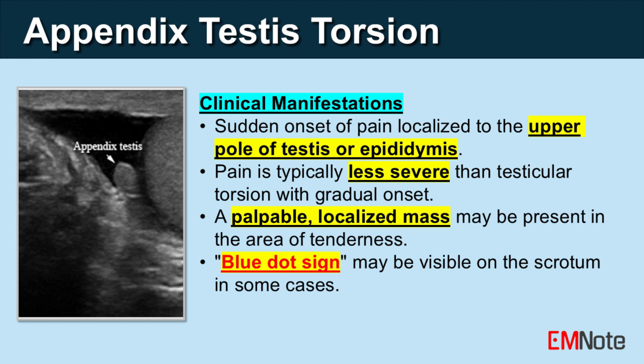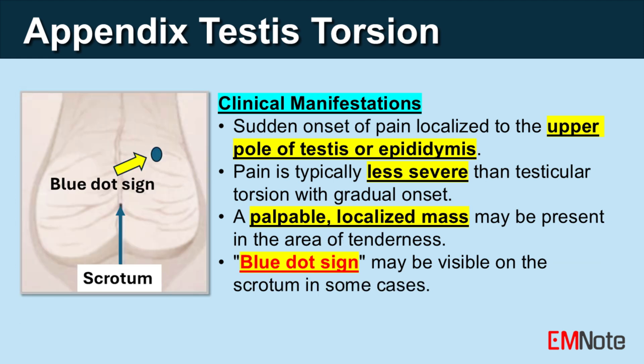The scrotum generally appears normal, and the cremasteric reflex is usually intact, which can help differentiate it from testicular torsion. While not always present, a blue dot sign, representing the ischemic testicular appendage, may be visible on the scrotum in some cases. Other possible symptoms include swelling in the scrotum, redness, and a blue discoloration due to blood loss.